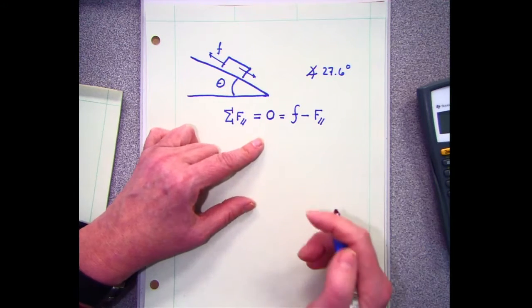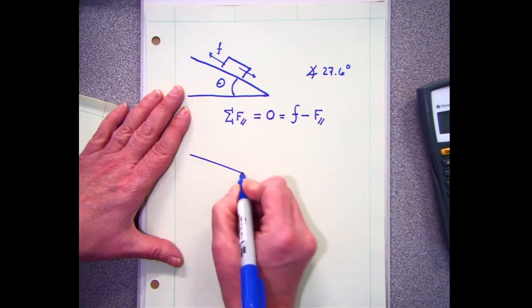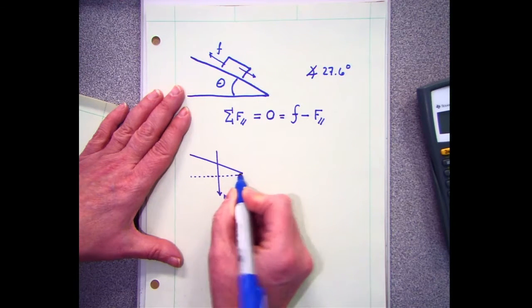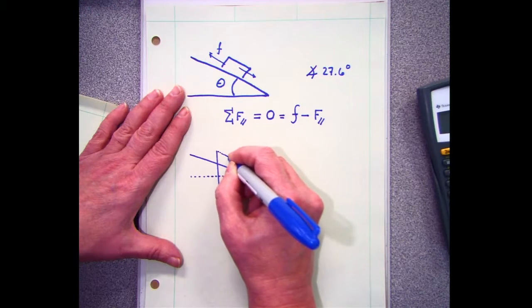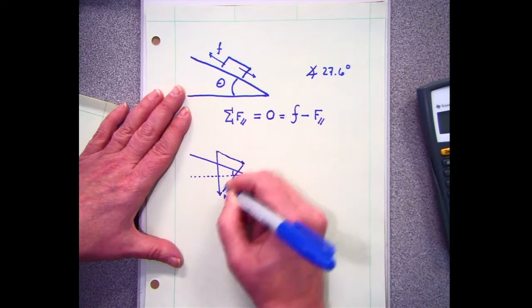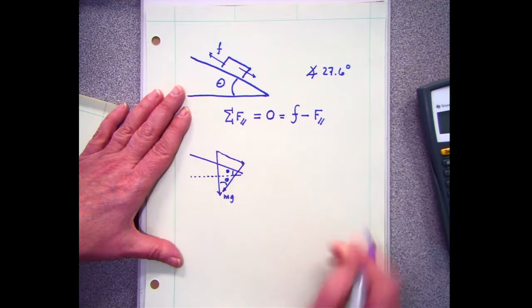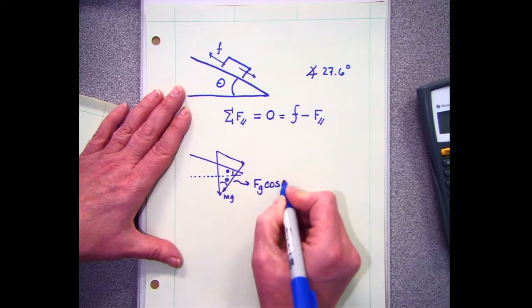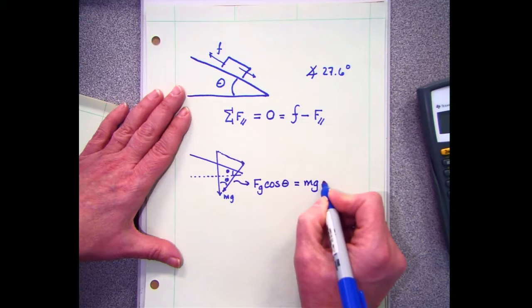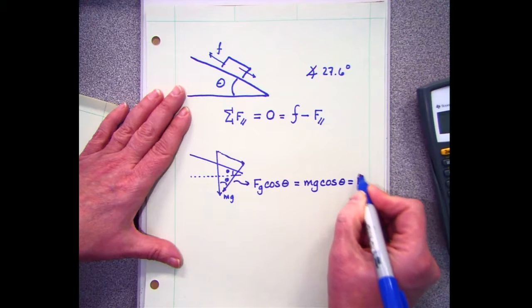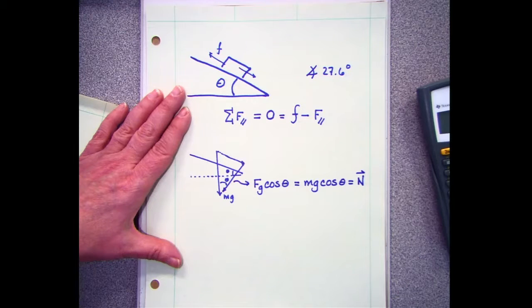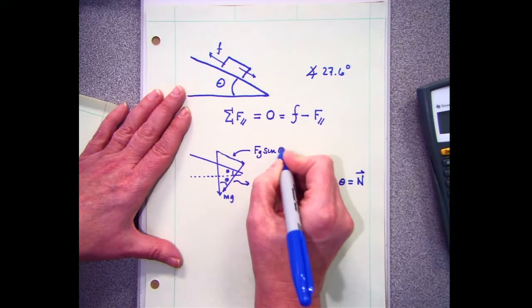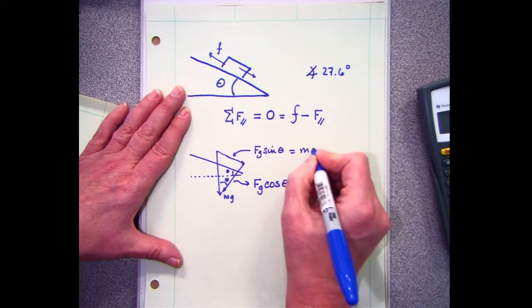If I have my incline, here's my force due to gravity. There's the parallel component and the perpendicular component, and this angle equals this angle. The perpendicular component is mg cosine of the angle — that's also equal to my normal force. The parallel component is mg sine of the angle.